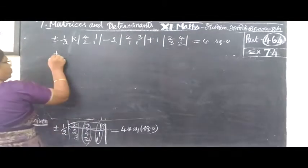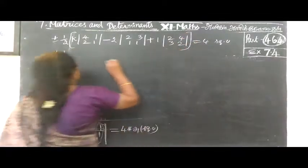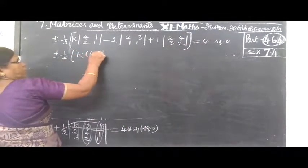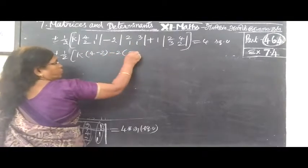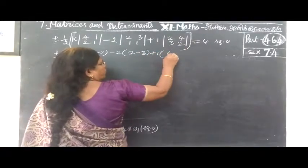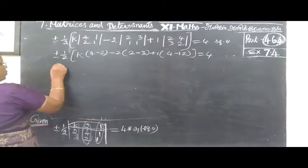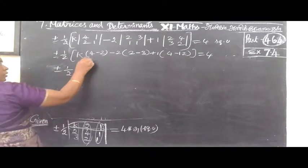So that is plus or minus. And that is 4 bracket. So K cross multiply 1, 4 minus 2 minus 2, 2, 2 minus 3. Then 1 bracket, 4 minus 12 equal to 4. So plus or minus that line, half K.